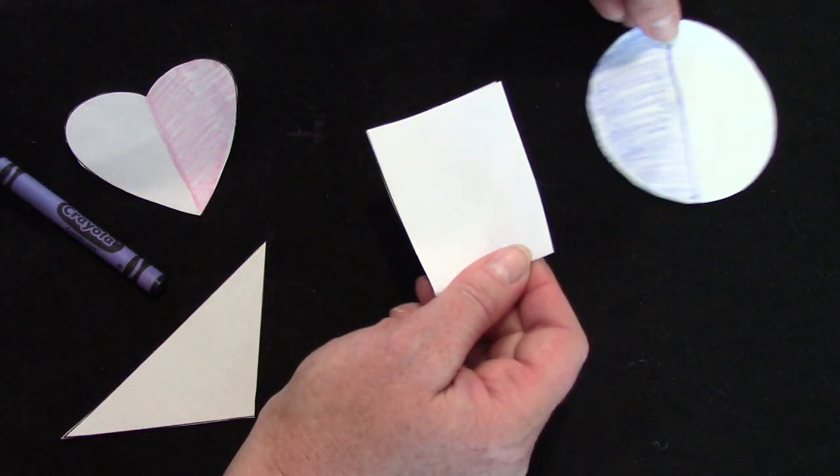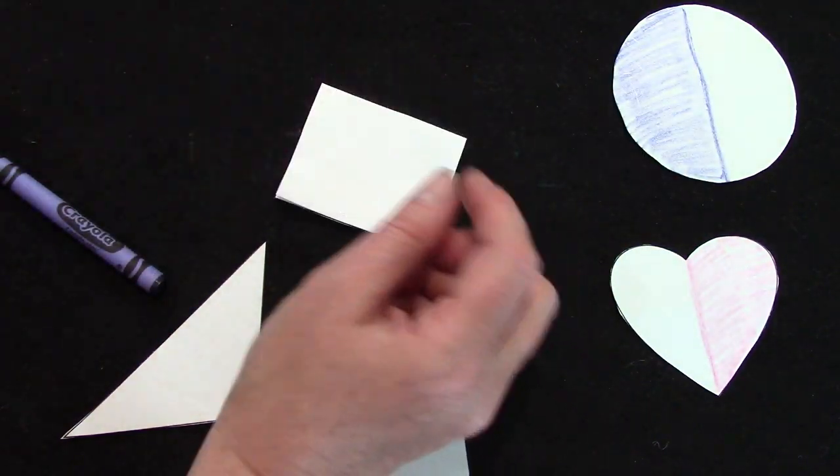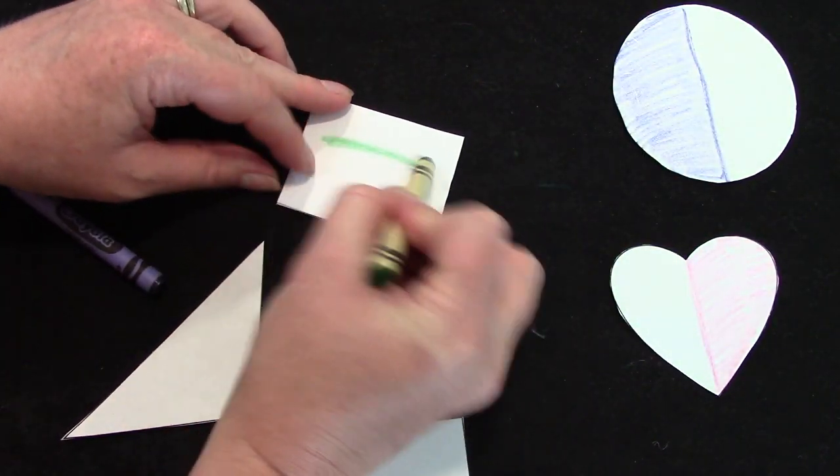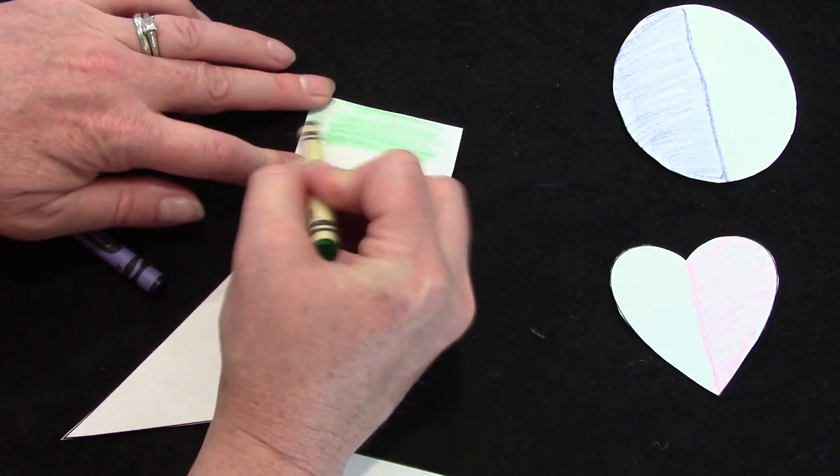I'm going to move my circle way over to this corner and my heart there. I am going to color this one green. You can color yours any color that you would like to.